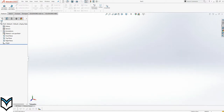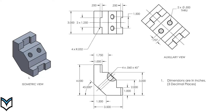Let's go to the drawing. In the drawing isometric view is given. The front view is given, that's a top view, that's an auxiliary view over here. The dimensions are in inches up to three decimal places. I'll start with the front view — I'll sketch the front view and extrude it to this depth.